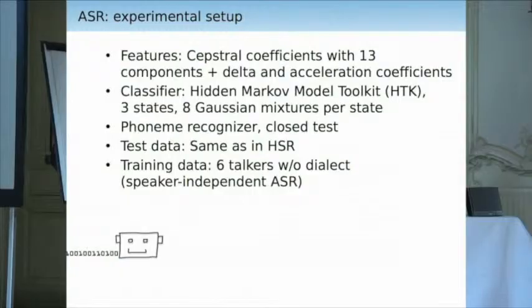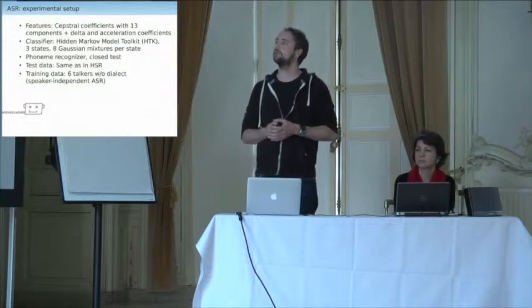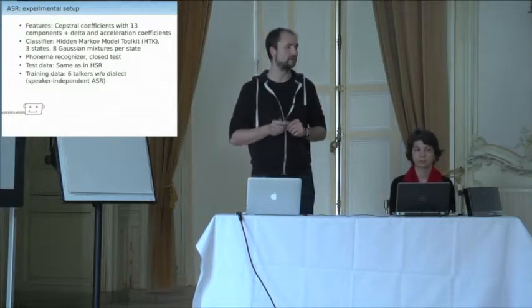The ASR experimental setup is pretty basic. We used the same features as for the resynthesis: MFCC coefficients with 13 components and delta features — standard setup for ASR. For the classifier we used a standard hidden Markov model, set up as a phoneme recognizer, meaning just like the listeners, the recognizer knew what phonemes were outside of the logotome. The test data was the same as in the human speech recognition experiments. Training data consisted of six talkers without dialect.